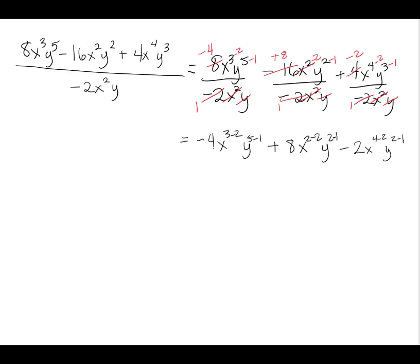Now I simplify the exponents: -4x (since 3-2=1) · y⁴ (since 5-1=4). For the second term, x^(2-2) = x⁰ = 1, so that drops out, leaving +8y (since 2-1=1). For the last term, -2x² (since 4-2=2) · y² (since 3-1=2). Here is our solution: -4xy⁴ + 8y - 2x²y².